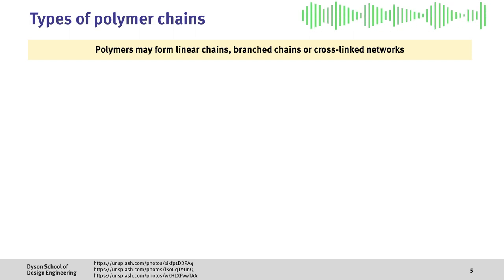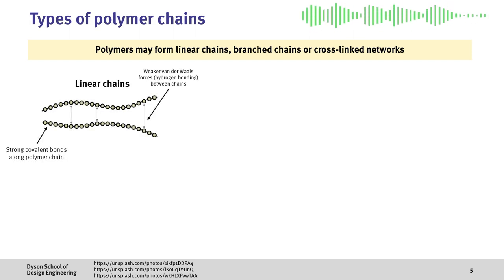In the case of linear chains, as the name suggests, these are long linear chains of polymers where covalent bonds hold the individual carbon chain together, with weaker van der Waals forces holding the separate chains together.